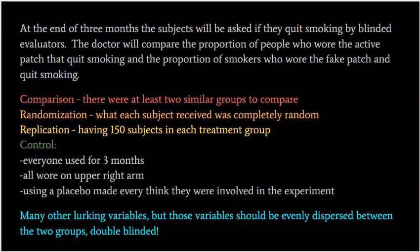I also had randomization because who received which treatment was completely random. Why do we have randomization? There are lots of lurking or confounding variables — exercise, diet, family support, ethnicity, age, gender — things that might help somebody quit smoking that I can't control. Randomization evenly disperses all those other variables into both groups, so before giving them the patch or fake patch, both groups are extremely similar, with a nice mix of all different sorts of people. That's a good thing.